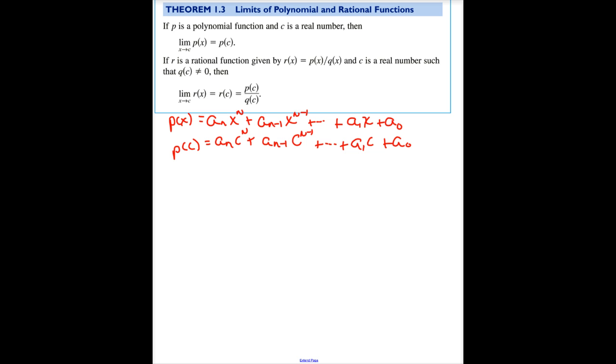Now rational functions are given by the quotient of two polynomial functions. The only thing you have to be careful of is that the denominator does not go to zero. Different things happen when the denominator goes to zero, but as long as the denominator does not go to zero, you have the same situation. The limit as x approaches c of the rational function is equal to the rational function evaluated at c, and you can find the limit of both polynomials.